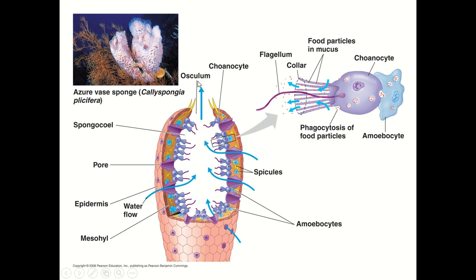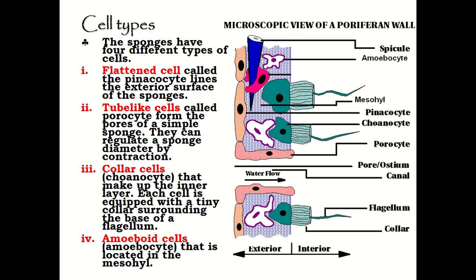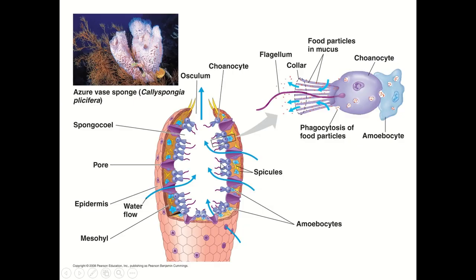In phylum Porifera, there are four different types of cells: the first is the flattened cell, the second is the tube cell, the third is the collar cell, and the last is the amoeboid cell. Flattened cells are known as pinacocytes.